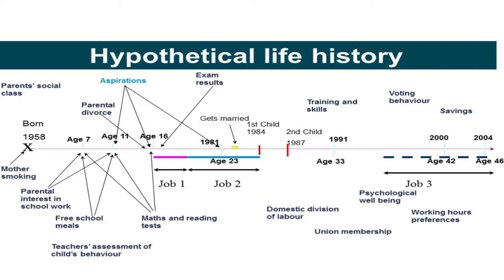There's been a lot of research using this cohort and others to look at the length of time between having a first child and returning to the labour market, and how that's changed for different cohorts — people like Heather Joshi have done a lot of work on that. We've got about 17,000 variables on every individual — 17,000 pieces of information on everybody in the cohort study. So when some people doing qualitative research say qualitative research is much more detailed, I'd point out this is an incredibly detailed account of somebody's life.